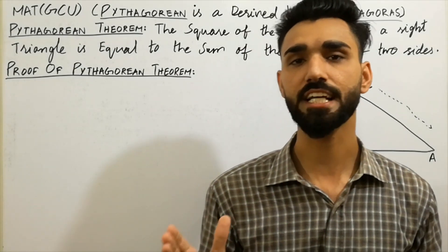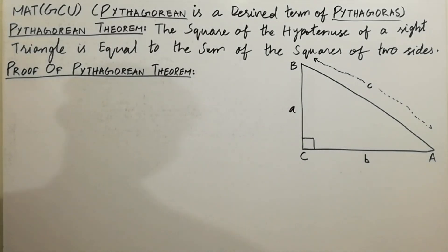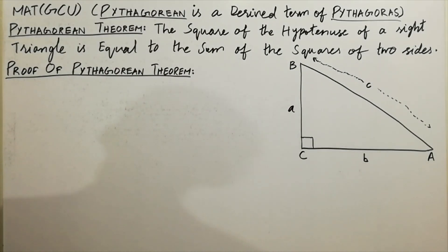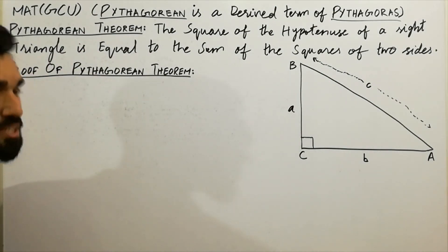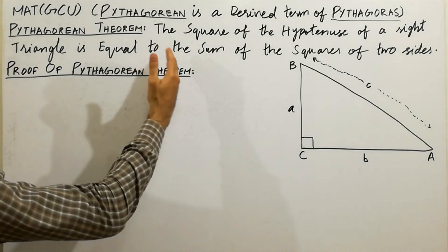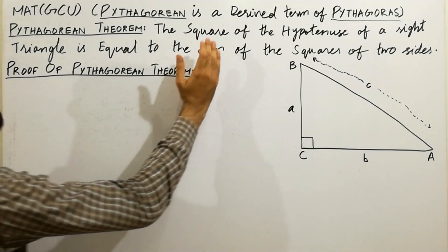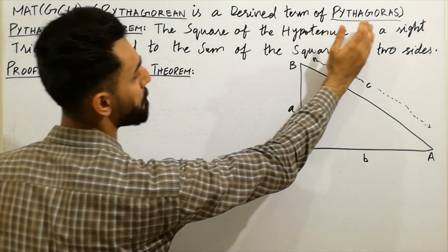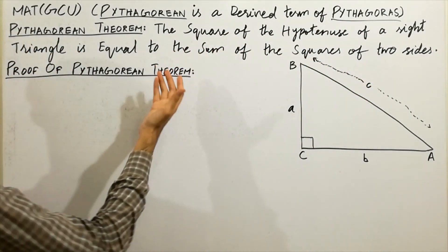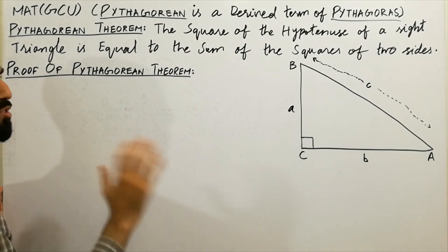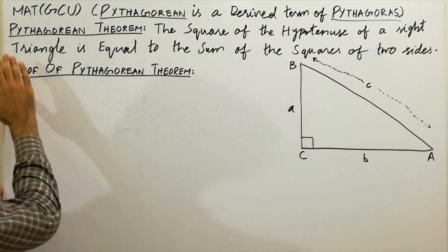So without wasting any time, let's begin the lecture. First of all, I will discuss the relationship between Pythagorean and Pythagoras. Pythagorean is a derived term of Pythagoras. You can say that Pythagoras and Pythagorean are both similar terms.